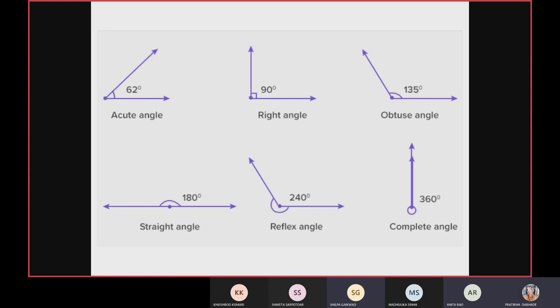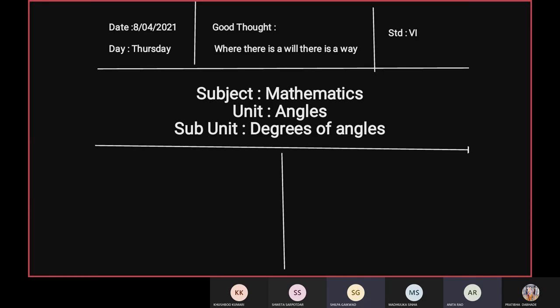See here you can see the different types of angles as I told you before: acute angle, right angle, obtuse angle, straight angle, reflex angle, and the complete angle. So from this topic, in the next topic we will learn about the degrees of angles. For today we will be having this much. So thank you very much students. Thank you ma'am.